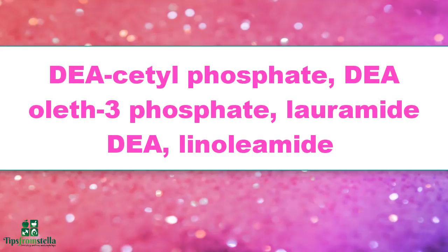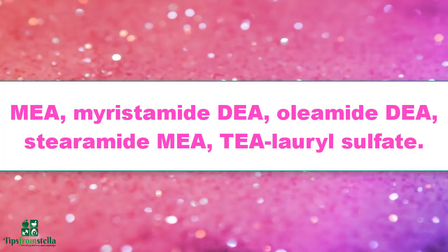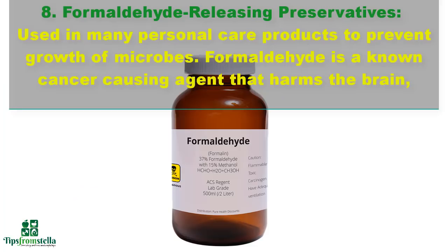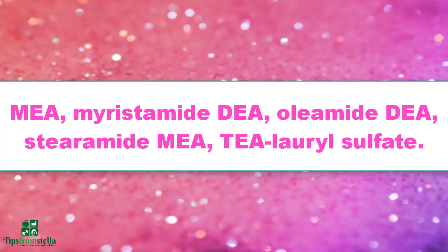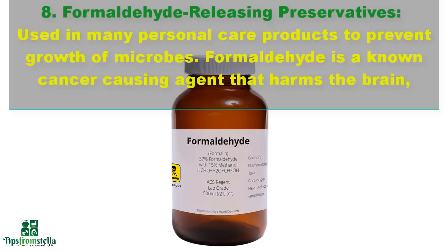Additional ethanolamine names to look out for include cocamide DEA, cocamide MEA, DEA-acetyl phosphate, DEA-oleth-3 phosphate, lauramide DEA, linoleamide MEA, myristamide DEA, stearamide MEA, and TEA-lauryl sulfate.